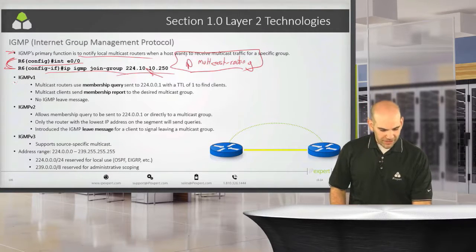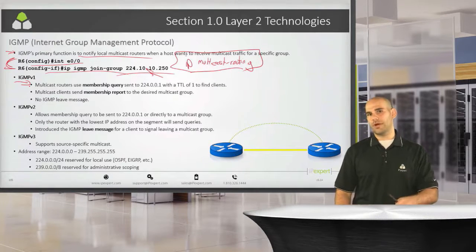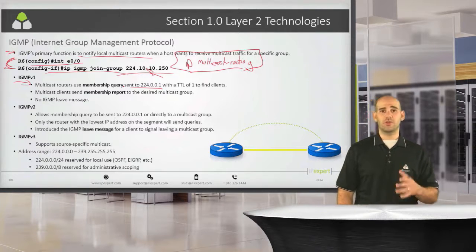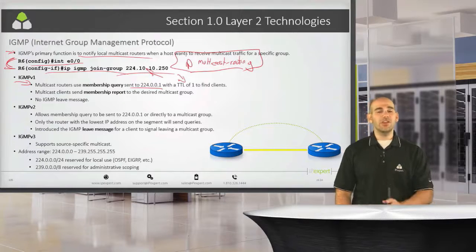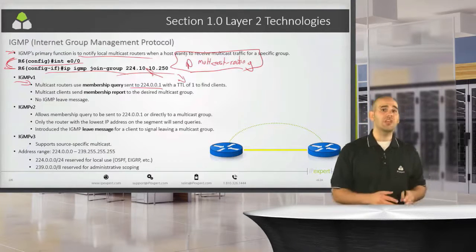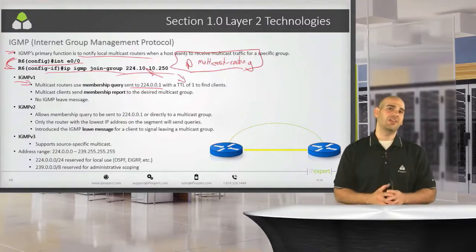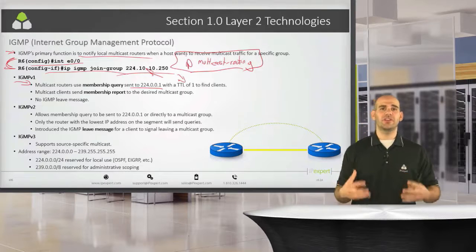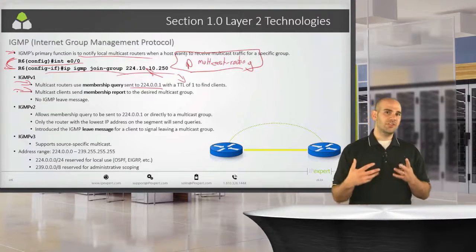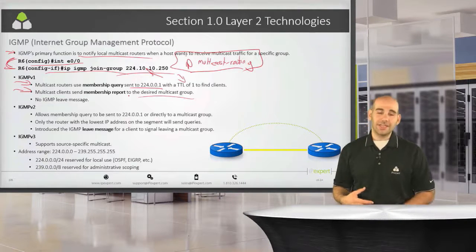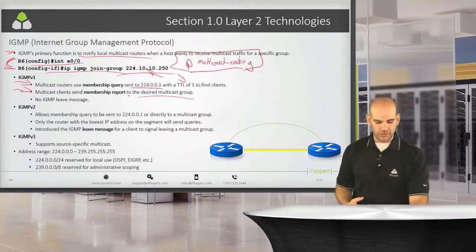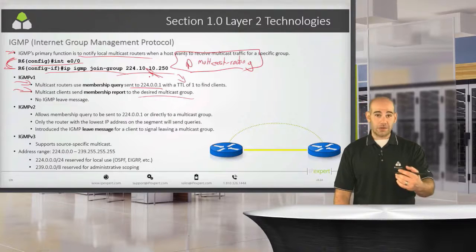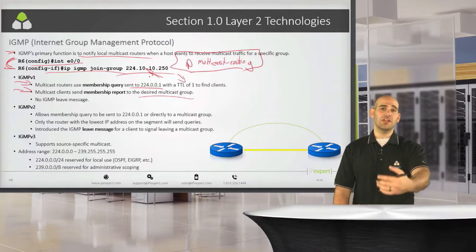IGMP version 1 gave us the membership query. All multicast-enabled routers would send this membership query to the group address 224.0.0.1 with a TTL of one, trying to find clients. When clients receive this query, they respond with a membership report containing the desired group. So I would say I'm interested in traffic for 224.10.10.250, and I would then be registered with that multicast router as a client interested in that particular traffic.